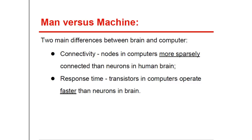We can look at the brain as a network of neurons. Similarly, the computer is a network of transistors. But there are two main differences between the two. Firstly, there is a large difference in connectivity. Nodes in a computer are only sparsely connected — a transistor is connected, on average, to less than 10 other transistors. On the other hand, neurons have up to 10,000 synaptic connections with other neurons. The second major difference is in response time. Response time in neurons is of the order of milliseconds, but for transistors it is of the order of nanoseconds. Thus, transistors operate about a million times faster than neurons.